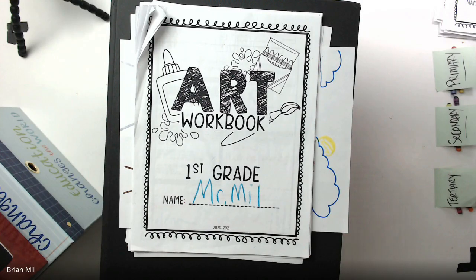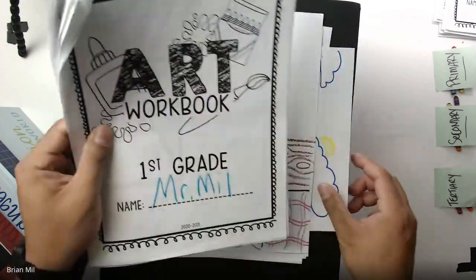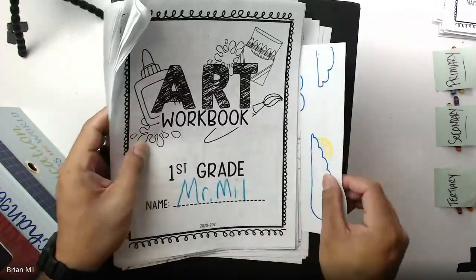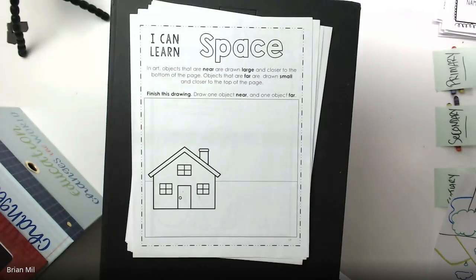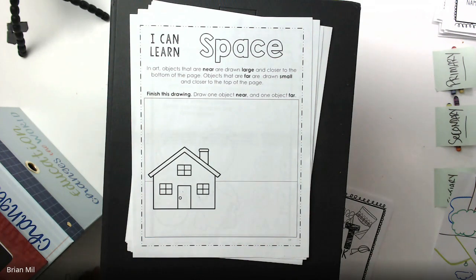Like always, if you don't have the art workbook, just using a blank sheet of paper will work just as fine. You're going to flip to the page that looks kind of like this. It says I can learn space and it has a picture of a house. This is where we left off. We did not do this page yet.